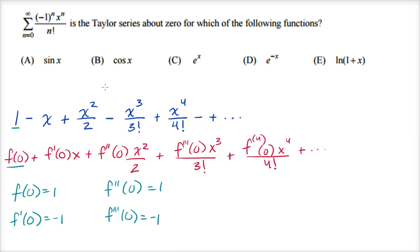Using this information, we can do some deductive reasoning. Evaluating each choice at zero: sine of zero is zero, not one — ruled out. Cosine of zero is one — still in the running. e to the zero is one — still in the running. The natural log of one plus zero is the natural log of one, which is zero — ruled out.